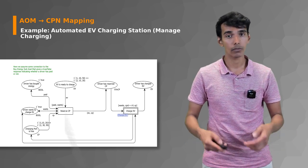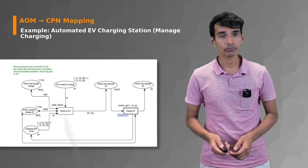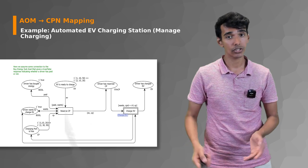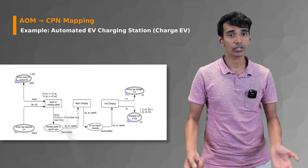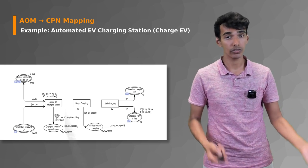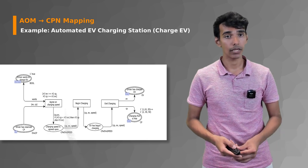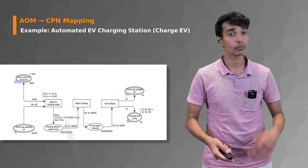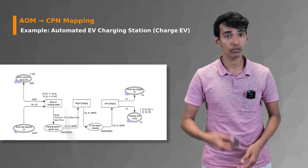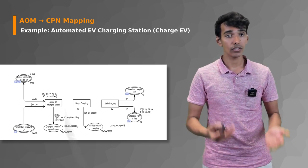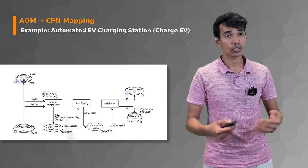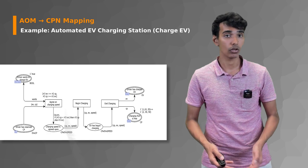The double-bordered boxes indicate sub-pages, where another level of abstraction shows more detail. On the left side of the sub-page, the driver wants to charge the EV, and as long as the driver wants to charge and has reserved the charging point, the driver's EV and charging point can agree on the charging speed. The guard condition at the top requires that the EV's charging speed must be greater than or equal to the charging point's maximum speed, and the charging point's maximum speed must also be greater than or equal to the EV's maximum charging speed.